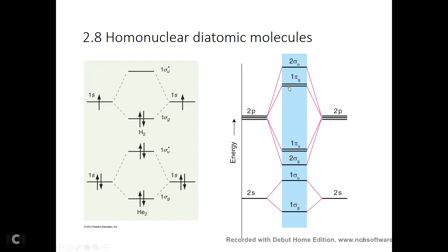These numbers are just labels — the first sigma-G, the second sigma-G, the second sigma-U, the first pi-G orbital. Those labels refer to the same type of orbitals. They have neglected the interaction between the 1s orbitals because they are core electrons. Although there are electrons in the 1s orbitals in lithium-2, they are not going to form a bond. In lithium-2, boron-2, carbon-2, nitrogen-2, we do not have to worry about the 1s electrons because they are chemically inert.